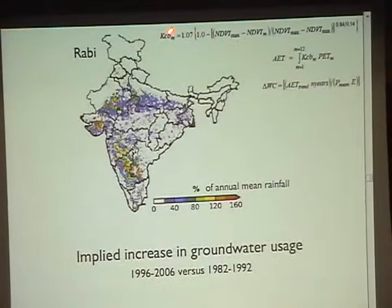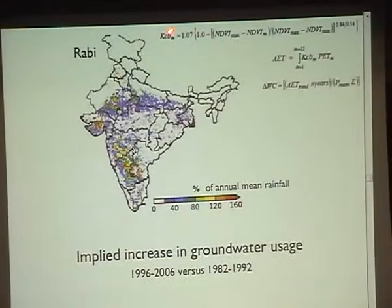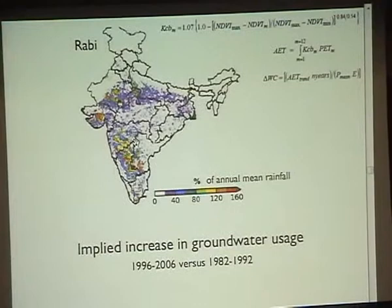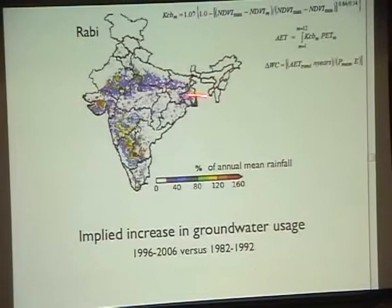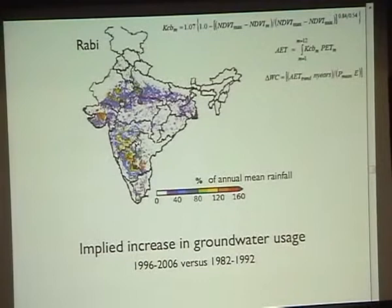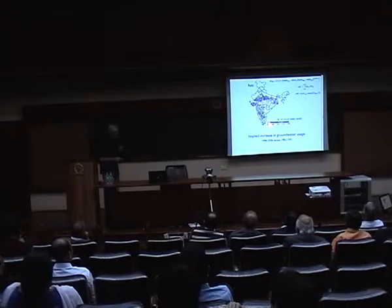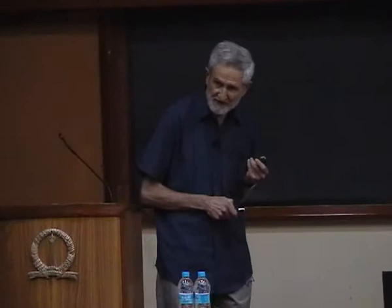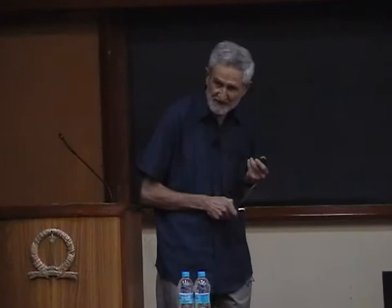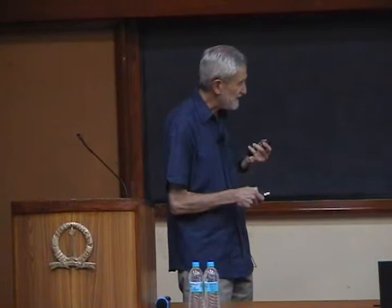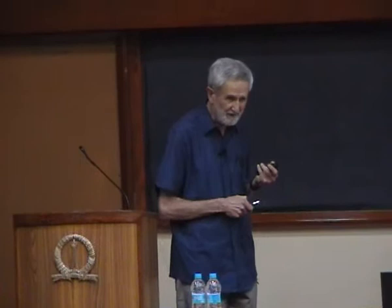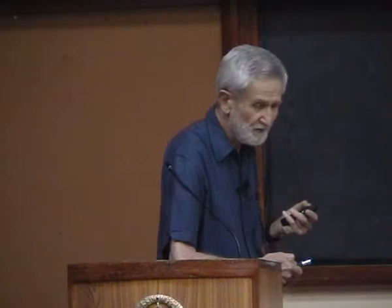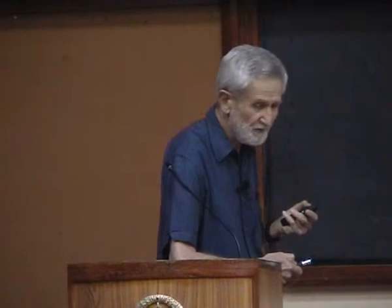From the greenness data you can also derive applied water use. This curve tells us the amount of increase in water use, expressed as if it were rainfall, during this period of increasing food production. There are large areas in the north showing implied water use increases in excess of 40%. To support this productivity from rain alone, you would have had to have a 40% increase in precipitation — but there has been almost no change in precipitation. So this is groundwater use, and the evidence is quite striking that groundwater use is enormous. We know the water tables are dropping.